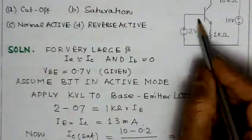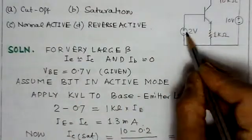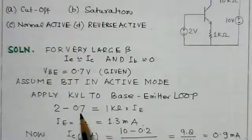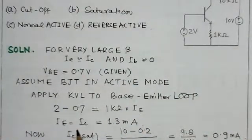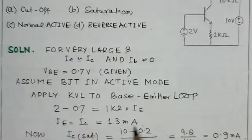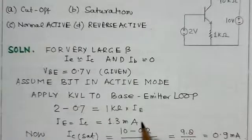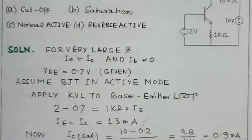That means 2 minus VBE, which is 0.7, equals 1 kilohm times IE. So you can get IE nearly equal to IC is equal to 1.3 milliamperes. The value of IE or IC is 1.3 milliamperes.